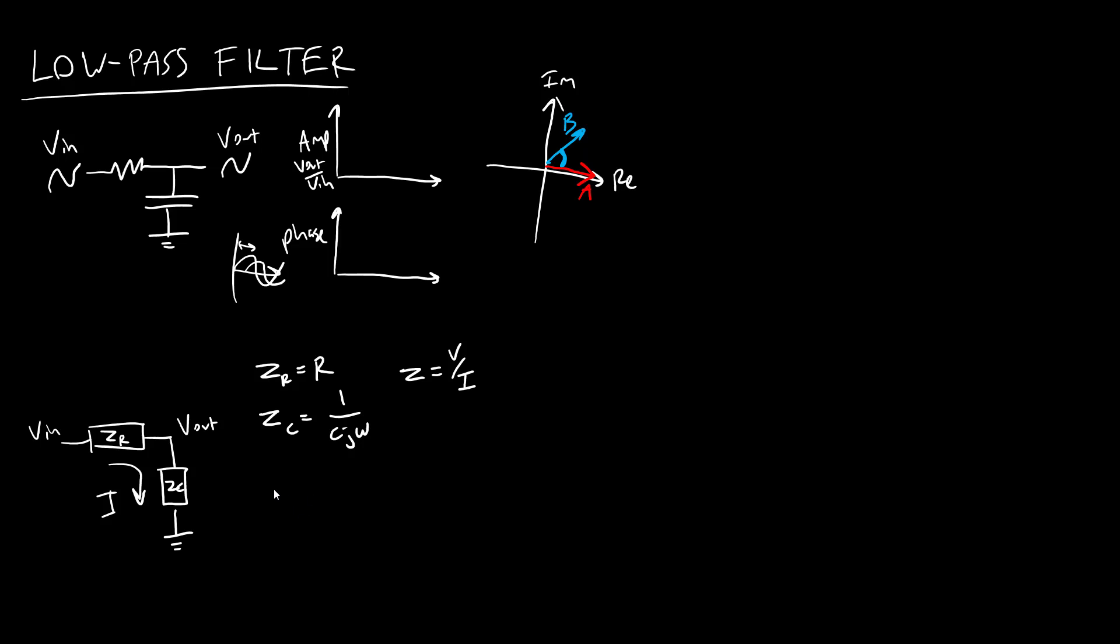And we have impedance in general just defined as the ratio of voltage to current for a specific part, which for a resistor happens to be just the resistance, but for a capacitor is frequency dependent. We also remember that we can combine impedances in series or parallel, just like we can with resistors. So I can represent this entire circuit as a single equivalent resistance, ZEQ, where in this case they are in series.